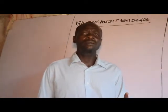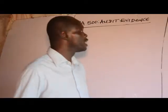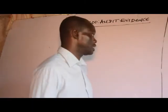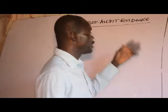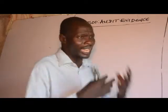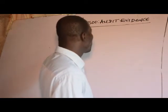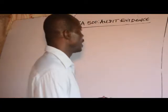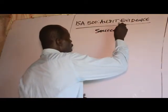Audit Evidence are the information obtained by the auditors during the course of their audit on which they base their opinion on the financial statements. Those information obtained by the auditor in the course of the audit to form an opinion on the true and fair view of the financial statements are said to be Audit Evidence. Now, let's look at the sources of Audit Evidence.